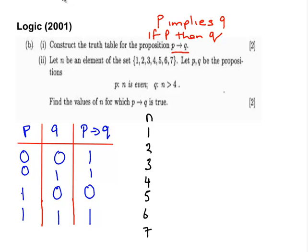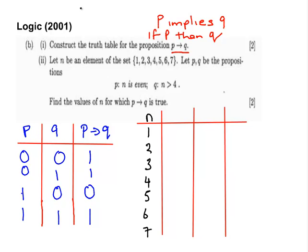Now what we're going to do next is see: are these values true for P and are they true for Q? We'll set up a little truth table here, very similar to what I've done last time. What will be helpful is to go through the values and just tick them off one by one. We'll do P first, and P is N is even.